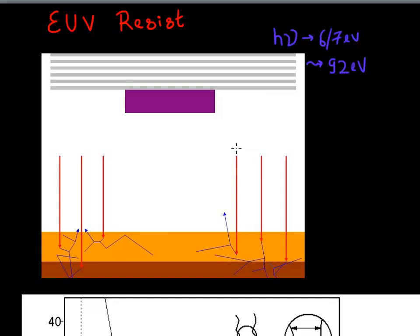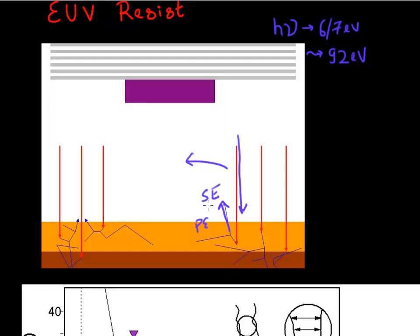If you hit your resist with photons of this high energy, you will generate secondary electrons, you will generate photoelectrons. These secondary electrons and photoelectrons add to something known as the resist flare. And what it leads to is essentially degradation in your image quality and your image fidelity.